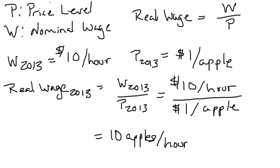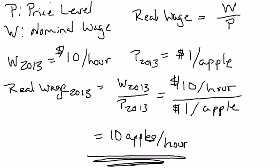Even though you're paid in dollar bills — $10 for every hour you work — that's your nominal wage. Oftentimes that's important, but many times that's not what economists care about. We often care about real quantities. So what we need to do is convert that $10 nominal wage per hour into a real wage per hour, which is the amount of stuff you can buy. If the only good is apples and each apple is $1, then your real wage is $10 an hour divided by $1 per apple, giving you 10 apples per hour. You can say the person's wage is either $10 an hour in nominal terms, or 10 apples per hour in real terms.